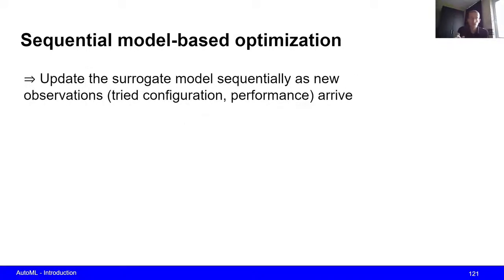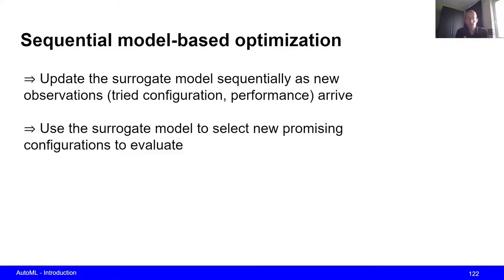So the idea is that we repeatedly update the surrogate model as we observe new hyperparameter configurations as well as their performances. And then we use this surrogate model to select new promising configurations that we want to evaluate.